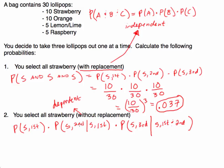It looks complicated, but it makes sense once we put in the values. The first pick: there are 10 strawberries out of 30 total. For the second pick, since we're working without replacement, we are not putting that strawberry back — so now there are only 9 strawberries. That means the probability of selecting a strawberry on the second pick is 9 out of 29.